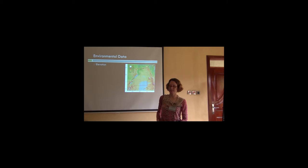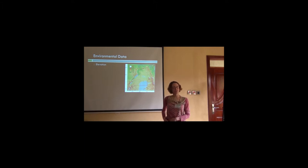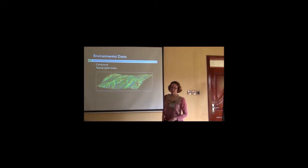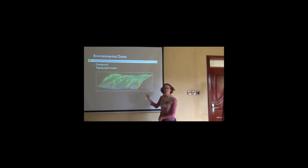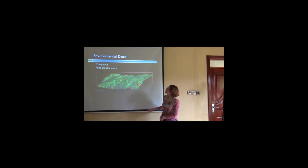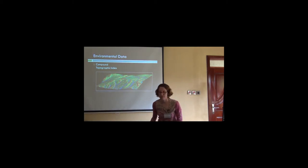Elevation is an important variable that a lot of people look at, and you can also derive many different variables from an elevation surface. One of these is the compound topographic index, which measures where water is likely to collect if there's a precipitation event. The blue areas show where water would be collecting, and the red areas show where it's likely to run off. For botanists especially, if a species prefers moist or very dry soil, this data layer can tell you a lot about what's going on in your study region and whether you've sampled all of the moist or dry areas.